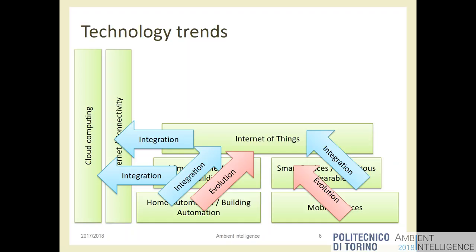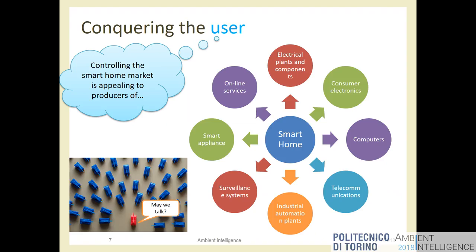From a technology point of view, we have a set of evolutions — each kind of device or technology became better — and a stronger integration trend where different technologies that were once separated are now all connected to each other. This enables new possibilities but also increases the complexity of systems. If you are thinking about an IoT or ambient intelligence system, you have to deal with small sensors, internet connectivity, cloud computing, and mobile devices — everything is needed to create one application.